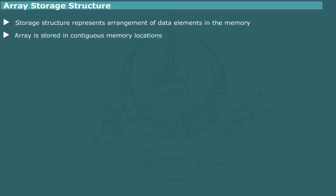Array storage structure. Storage structure represents the arrangement of data elements in the memory of a computer. An array is always stored in contiguous memory locations. The number of storage cells allocated to each element depends on the data types.